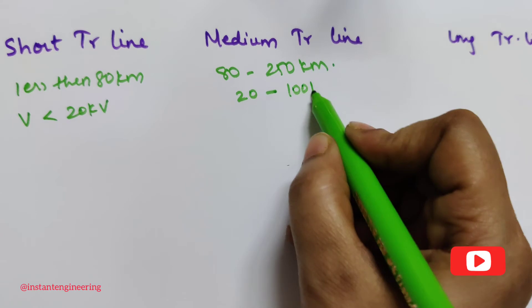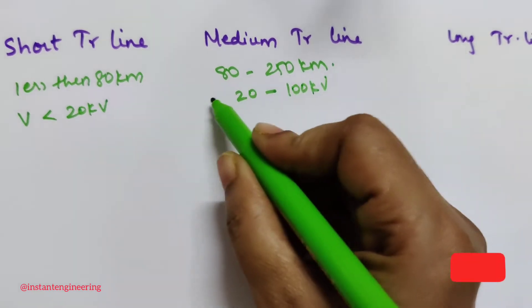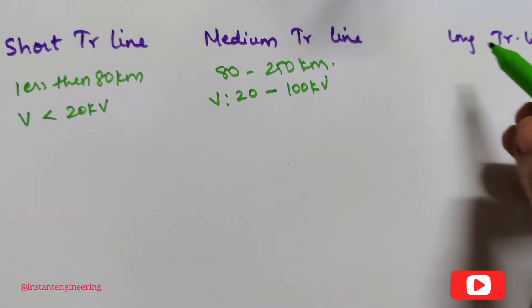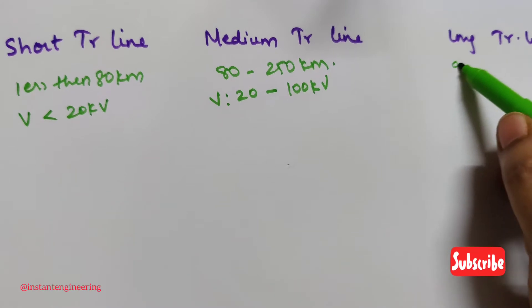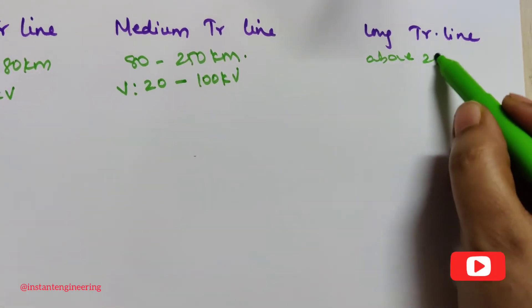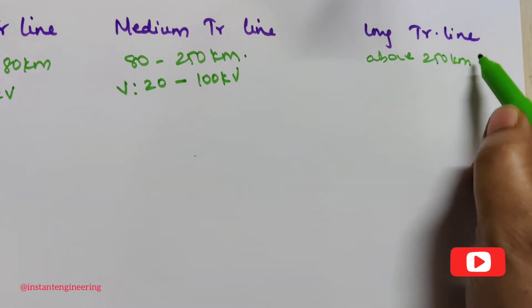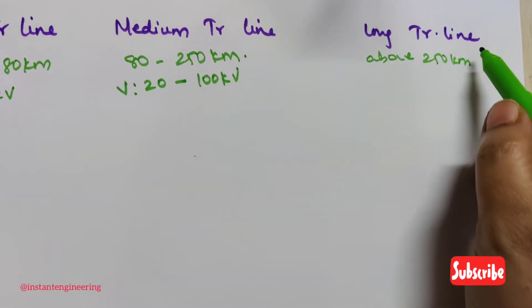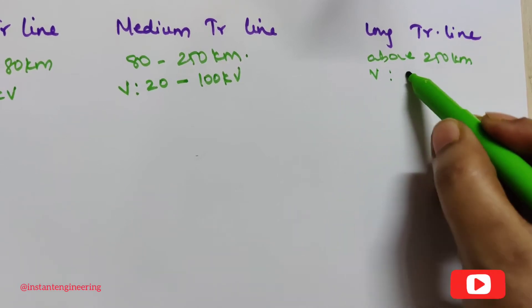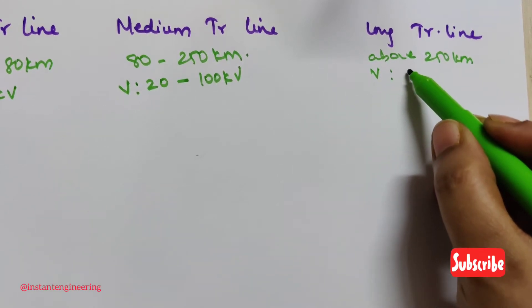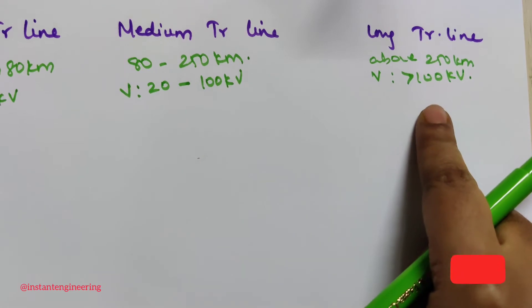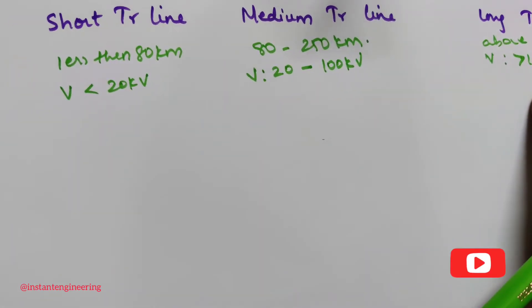A long transmission line is above 250 kilometers, and its operating voltage is greater than 100 kV.